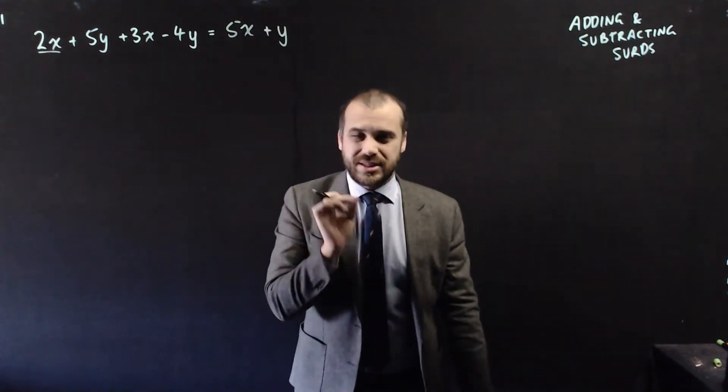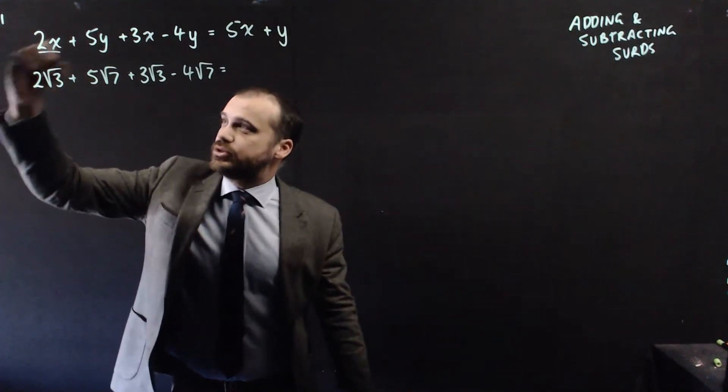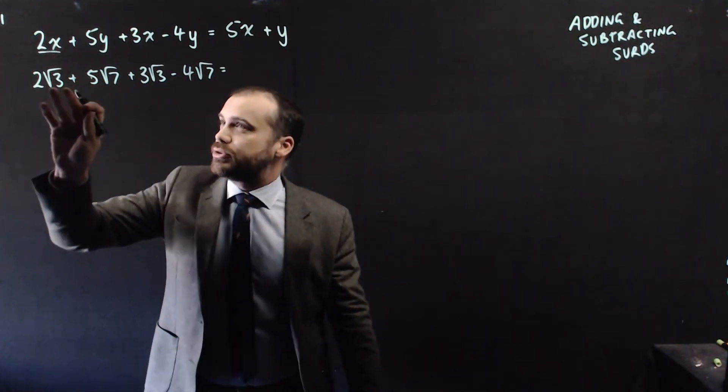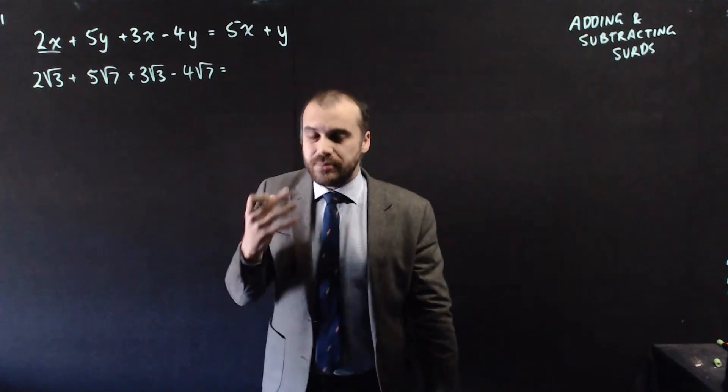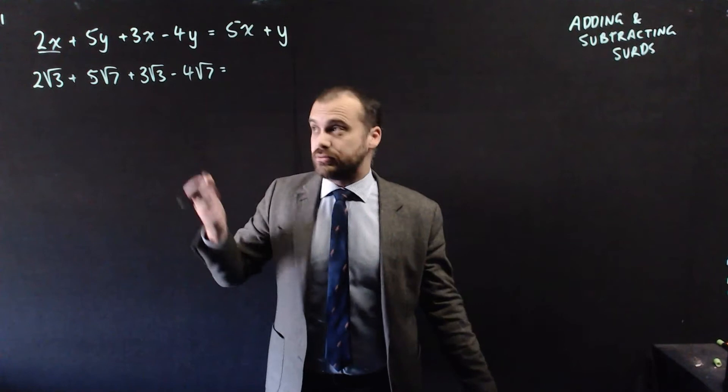Now I'm going to do exactly the same thing with surds. So look at all the coefficients, they're the same: 2, 2, 5, 5, 3, 3, negative 4, negative 4. I've replaced the x's with root 3's and I've replaced the y's with root 7's. They're going to behave the same way because the x's and the y's might have just meant root 3 and root 7.